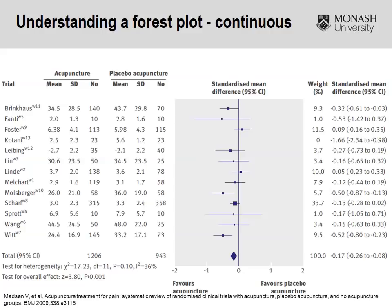Here we have a forest plot from a continuous outcome viewpoint. This study looks at acupuncture for the treatment of pain, comparing acupuncture versus a placebo. For each study we have the mean, standard deviation, and number of participants. Looking at the first study, the mean difference favours acupuncture — there is a reduction of 0.32 points in pain for participants receiving acupuncture, with a confidence interval of negative 0.612 to negative 0.03.